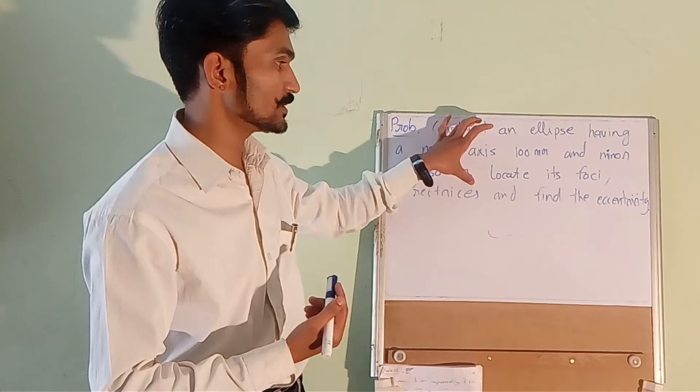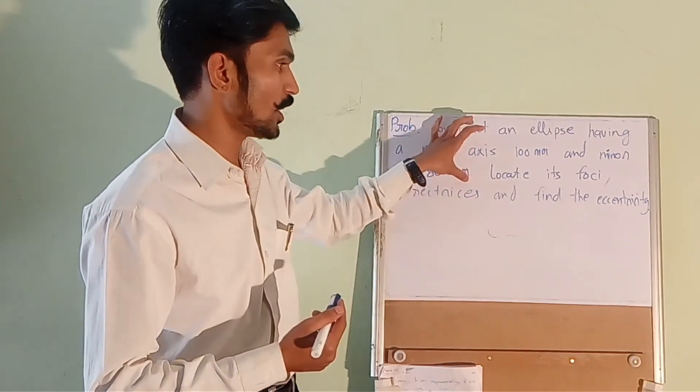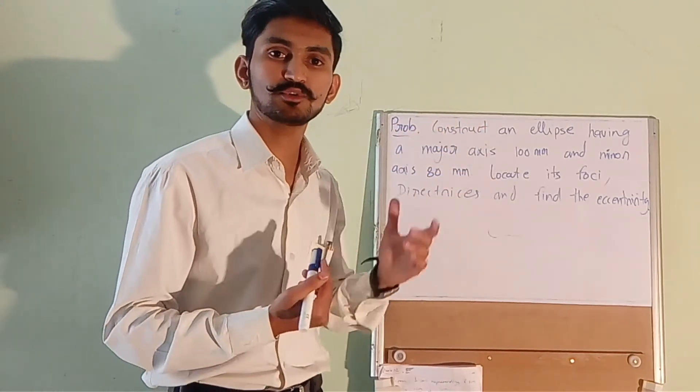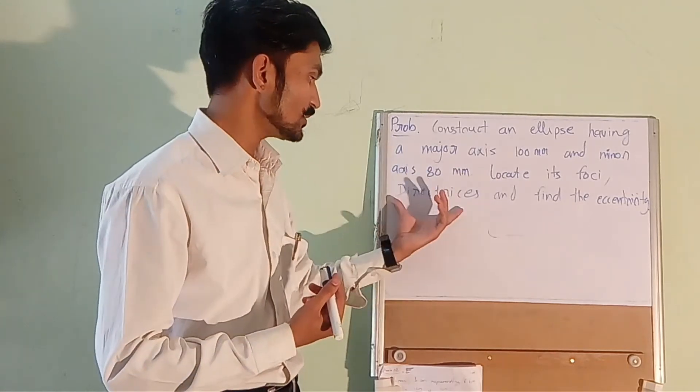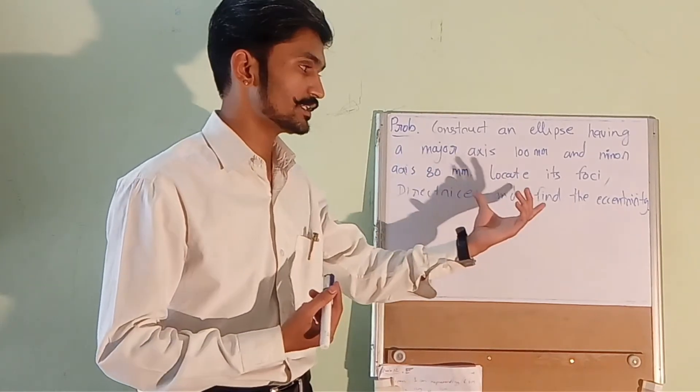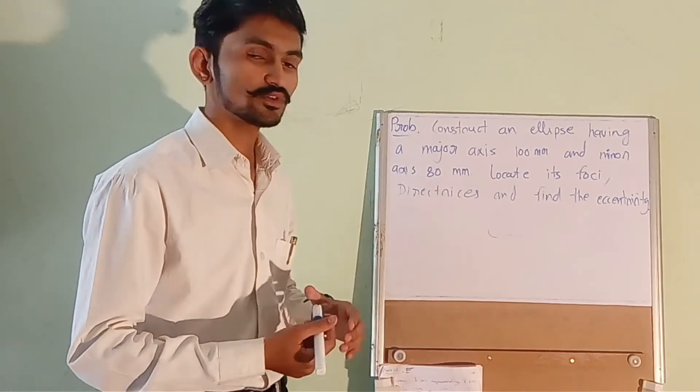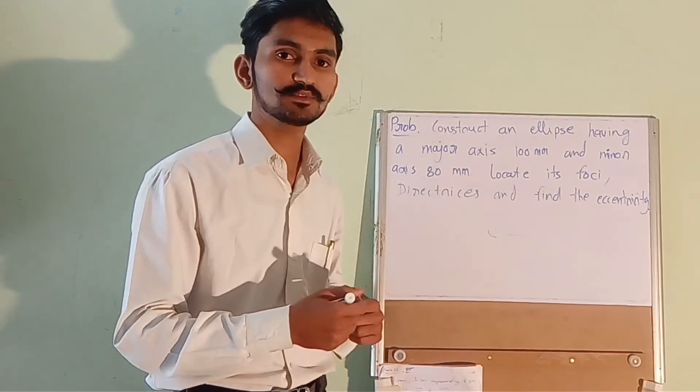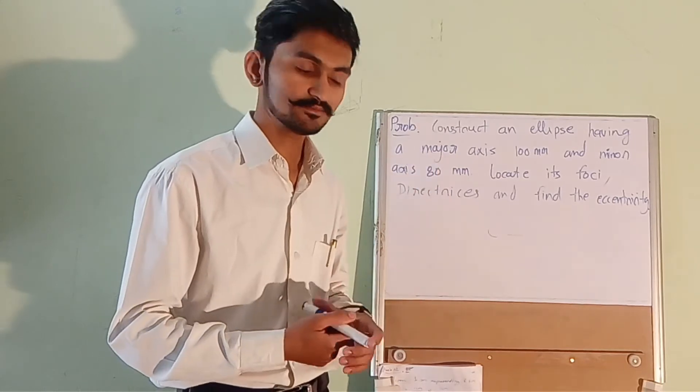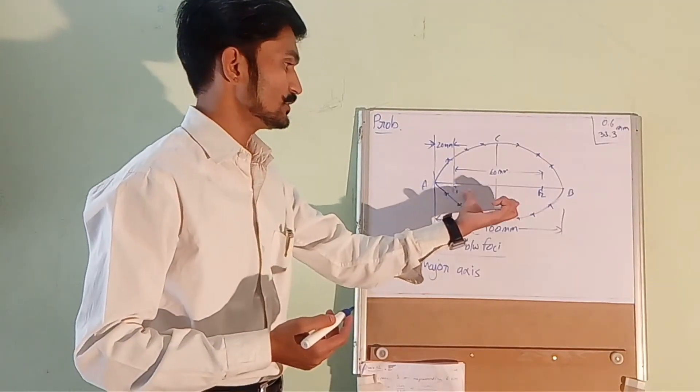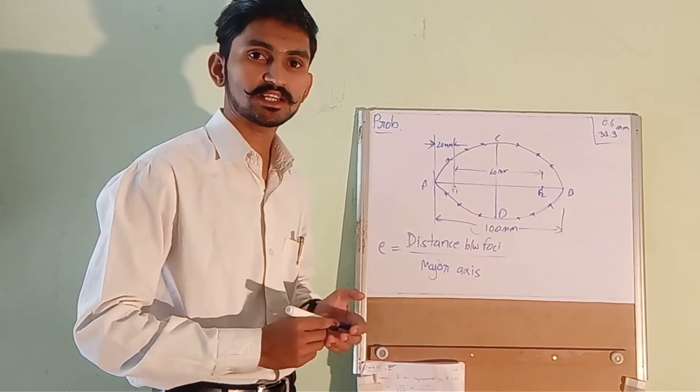So I will not be solving that part of the question. If you want to know how to solve that part, you have to watch my previous video. So I will be solving only directrices and find the eccentricity. First of all we will need to draw the ellipse using the previous method. We have drawn the ellipse using arc of circle method.